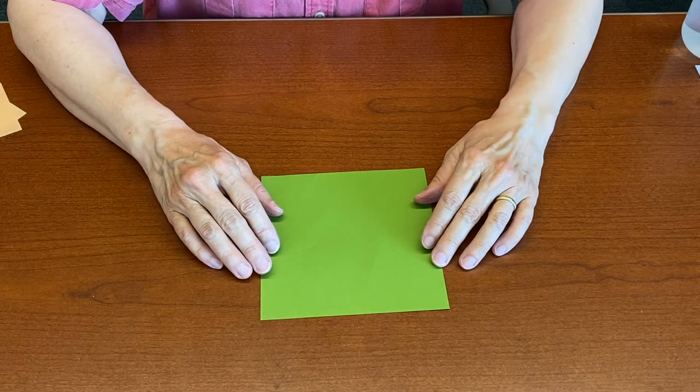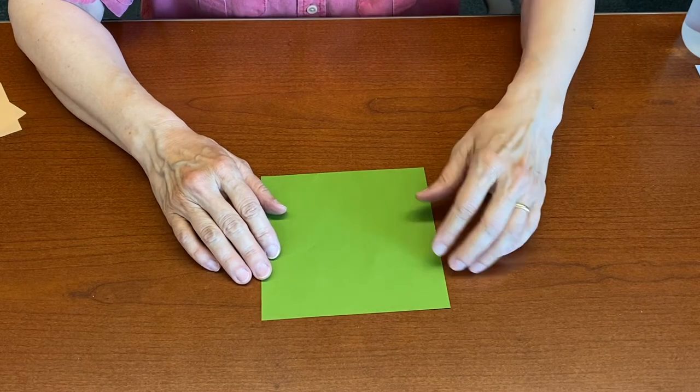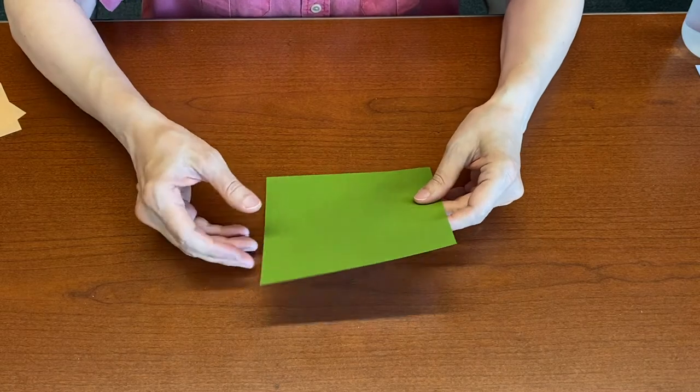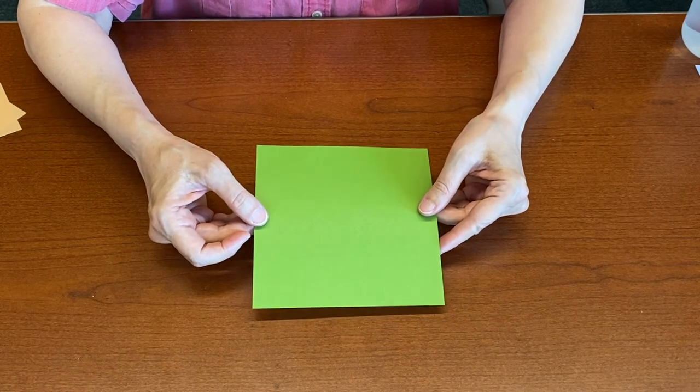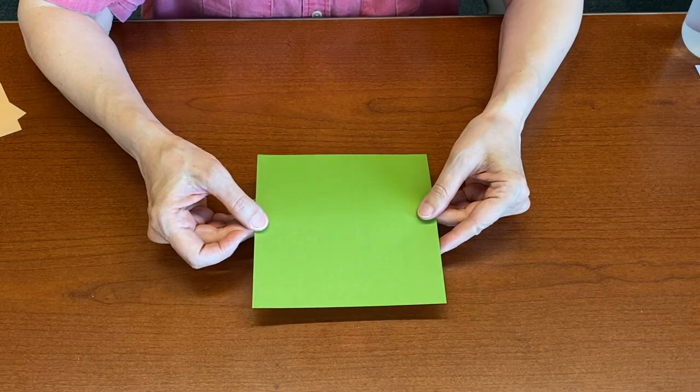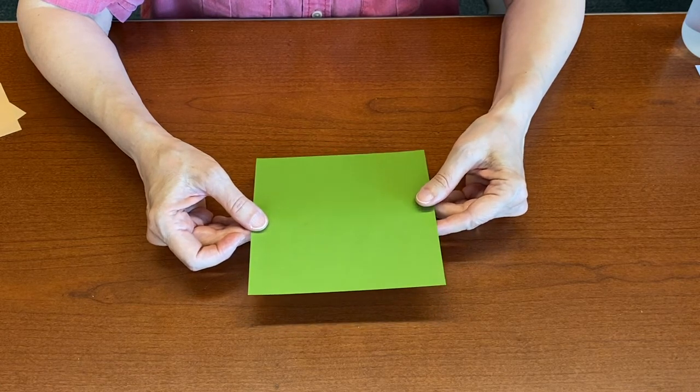The cicada is a bug or insect and this model is a traditional model. It's been folded for many years and we don't know who folded it first, probably several hundred years ago.